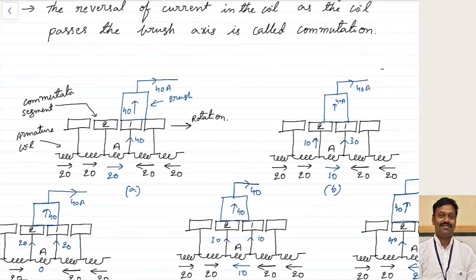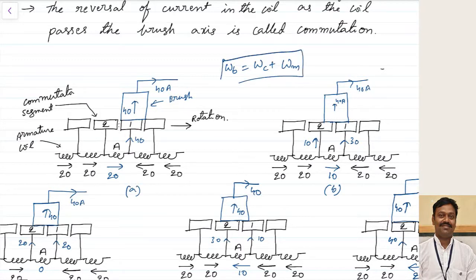Let us see the commutation process one by one. First I am seeing the ideal commutation. Let us assume the width of the brush is equal to the width of the commutator segment plus the width of the mica insulation — because between two commutator segments there will be a mica insulation. Let us assume the brush is directly in contact with only commutator segment one. When it is in contact with commutator segment one, let us assume the output current is 40 amperes, and the maximum current that can pass through each coil is 20 amperes.